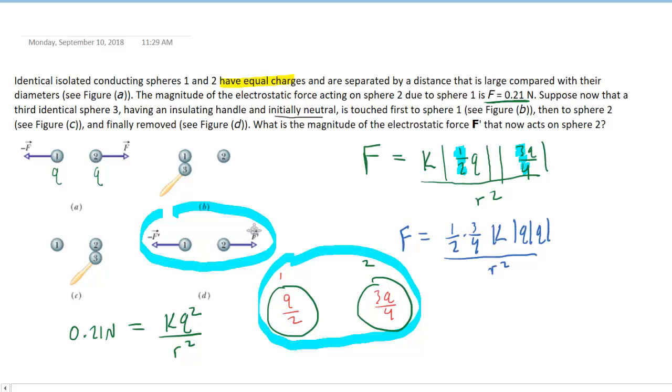Recall that we assumed that the Qs were positive. So we can just remove the absolute value symbols. And also notice that when we multiply these fractions, we're going to have 3 eighths. Just multiply the numerators and the denominators. So you end up with 3 eighths KQ squared over R squared.